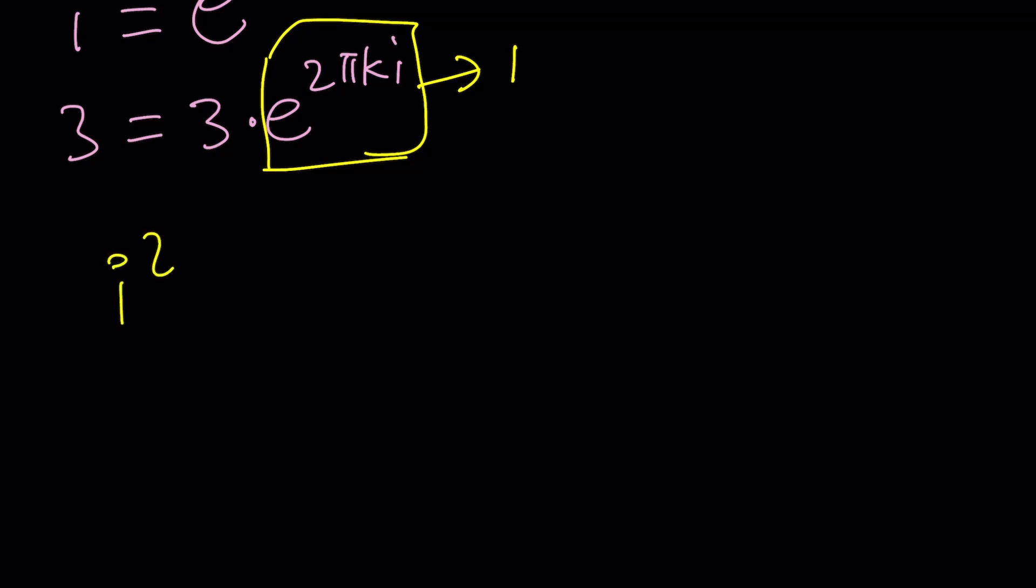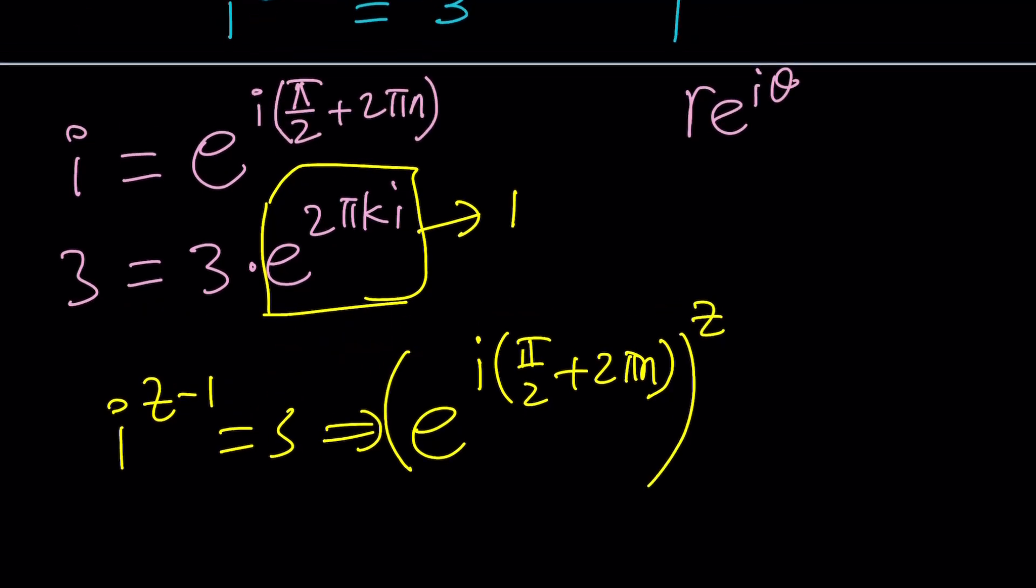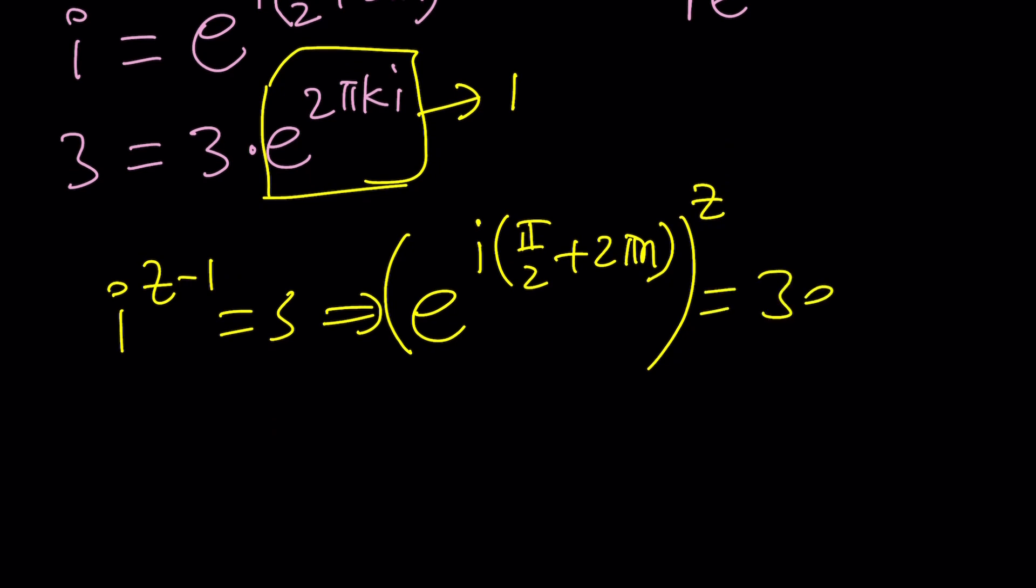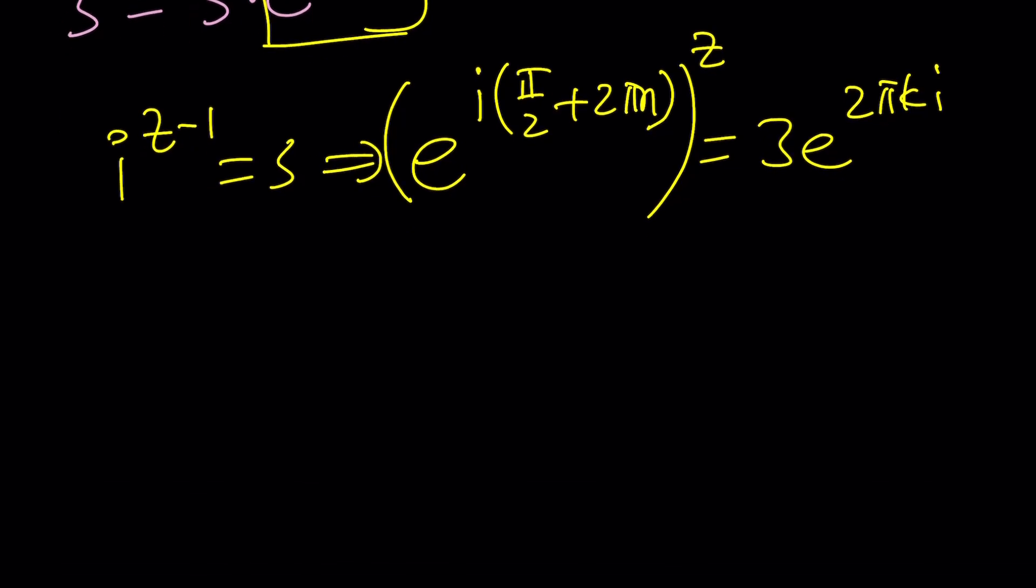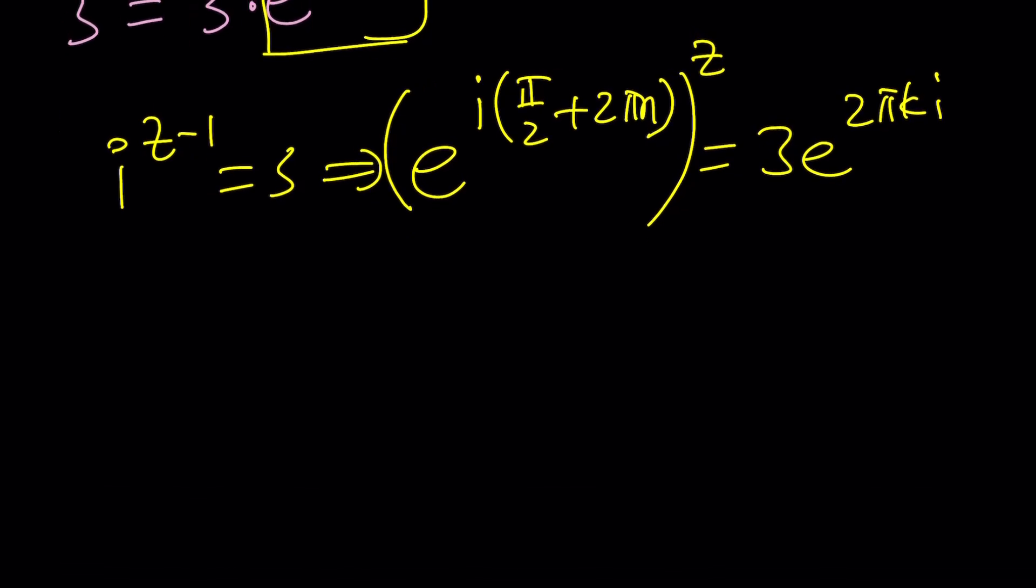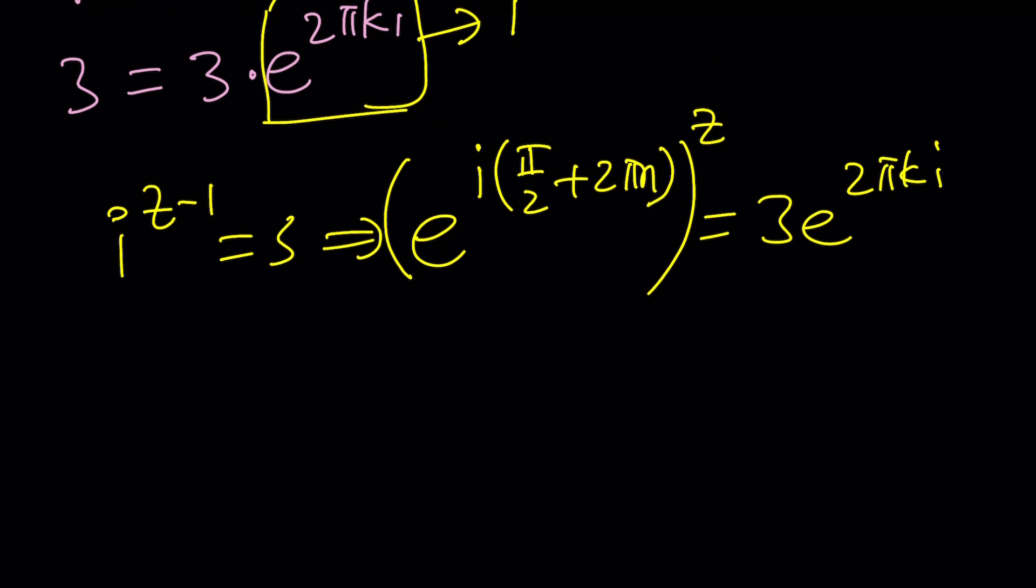So now let's go ahead and plug everything in to our equation. We have i to the power z minus 1 equals 3, remember? Now we're going to replace i with e to the power i times pi over 2 plus 2 pi n. This is i. We're going to raise it to the power z. 3 e to the power 2 pi k i. k and n are both integers. z is not, probably. So what do we do next? Go ahead and multiply by this, and that's going to give you e to the i z, something, something. Now we're going to go ahead and natural log both sides.